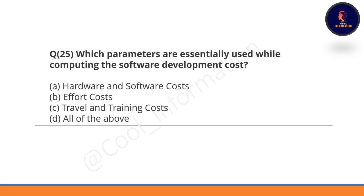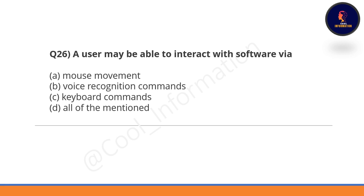Question 25: Which parameters are essentially used while computing the software development cost? Options are hardware and software cost, effort cost, travel and training cost, or all of the above. The correct option is D — all of the above.